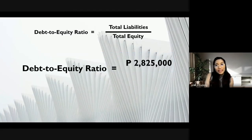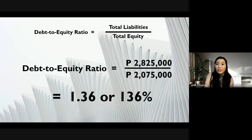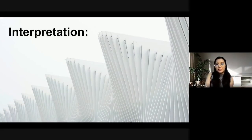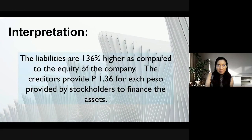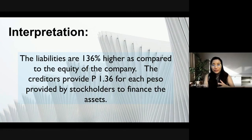Solving for the debt-to-equity ratio by dividing total liabilities by total equity gives us 1.36, or 136%. This means the liabilities are 136% of the equity of the company, showing that creditors provide $1.36 for every peso provided by the owners to finance the assets.